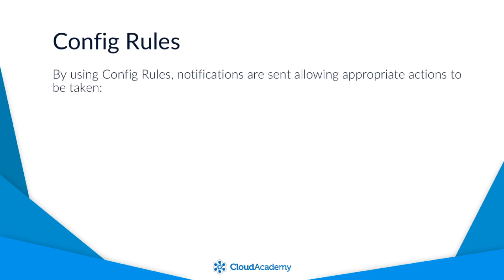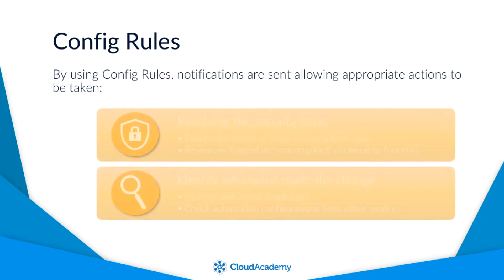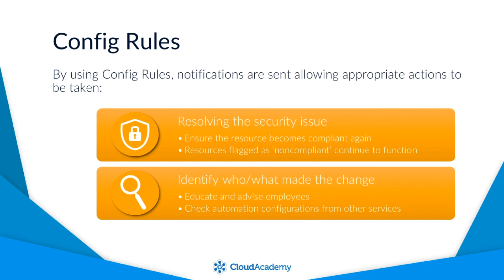By using config rules, it allows the appropriate action to take place when a notification is received of a non-compliant resource, which may include resolving the security issue identified and ensuring the resource becomes compliant again. Remember, just because a resource is flagged as non-compliant does not mean it is removed from your environment — it will continue to function. Identify who or what made the change. If an employee made the change, advise and educate them on the importance of security and why that resource requires set configurations. If it was a service, check your automation configurations to ensure it doesn't happen again. Using AWS Config Rules allows a continuous monitoring solution for a wide range of uses to ensure compliance is maintained within your environment.